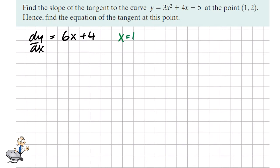The value of this when x = 1, because it's the point (1, 2), is found by substituting 1 in for x into this derivative function. So that gives us 6 times 1 plus 4 which is 10. So that's the slope of the curve or the slope of the tangent at the point (1, 2).